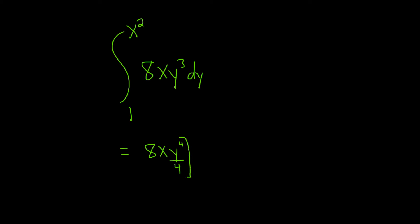And then y here is going from y equals 1 to y equals x². Notice how I'm specifying y equals instead of just putting like 1 and x². The reason I'm doing that is just to be extra clear. I don't want to mess up and plug in stuff for x.